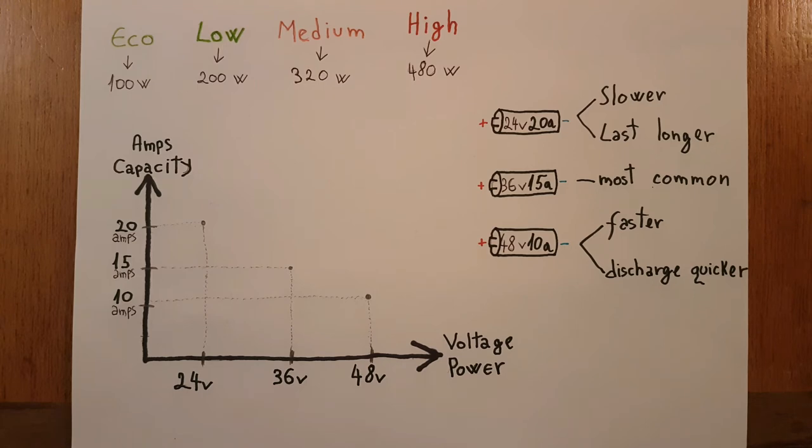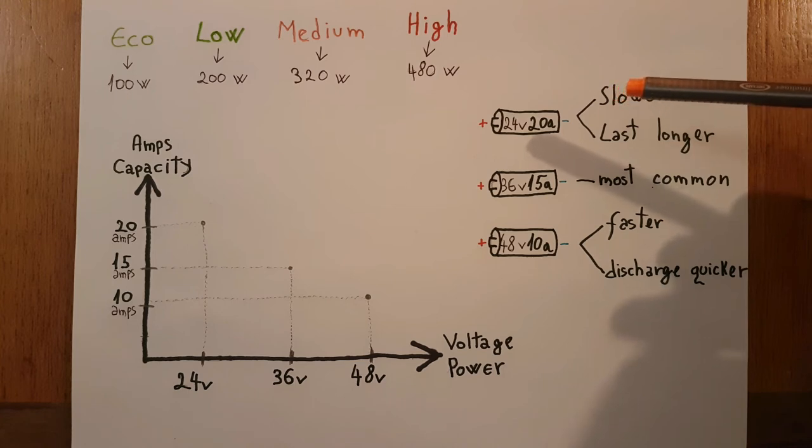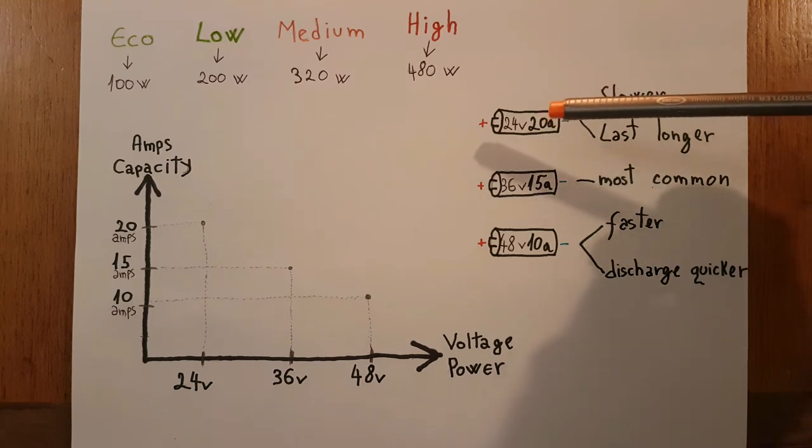But yet the difference is that with 48 volts you will travel faster and the battery will discharge quicker, compared to a 24 volts which is built for slow rides, therefore lasting longer due to its 20 amps capacity.